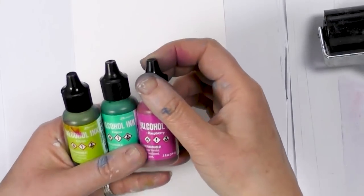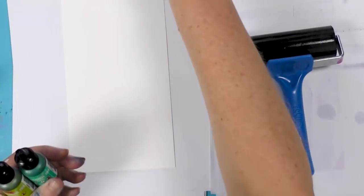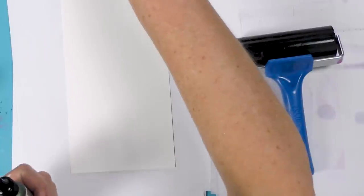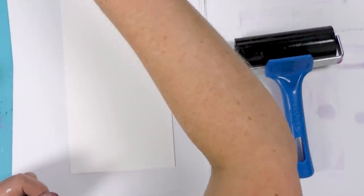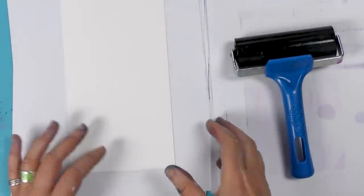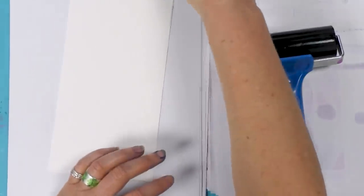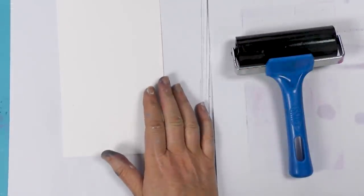Or, I might actually use the raspberry. That's even brighter. So I'm going to go with those three. But again, if you haven't got these colors, don't worry about it. Just use whatever you've got. It's about the technique more than anything. Most of the alcohol ink colors go really well together.